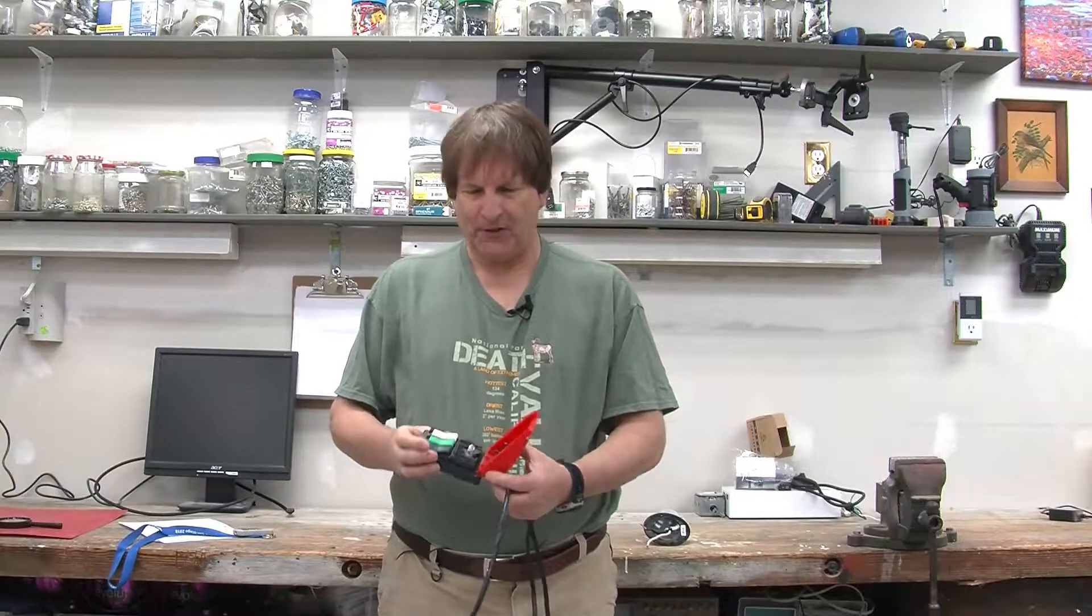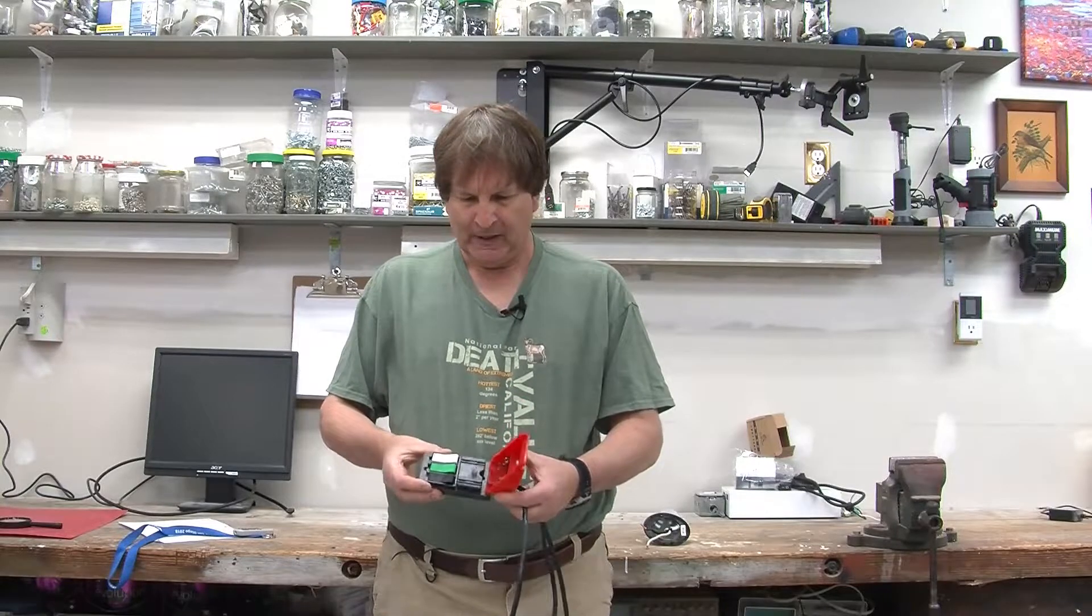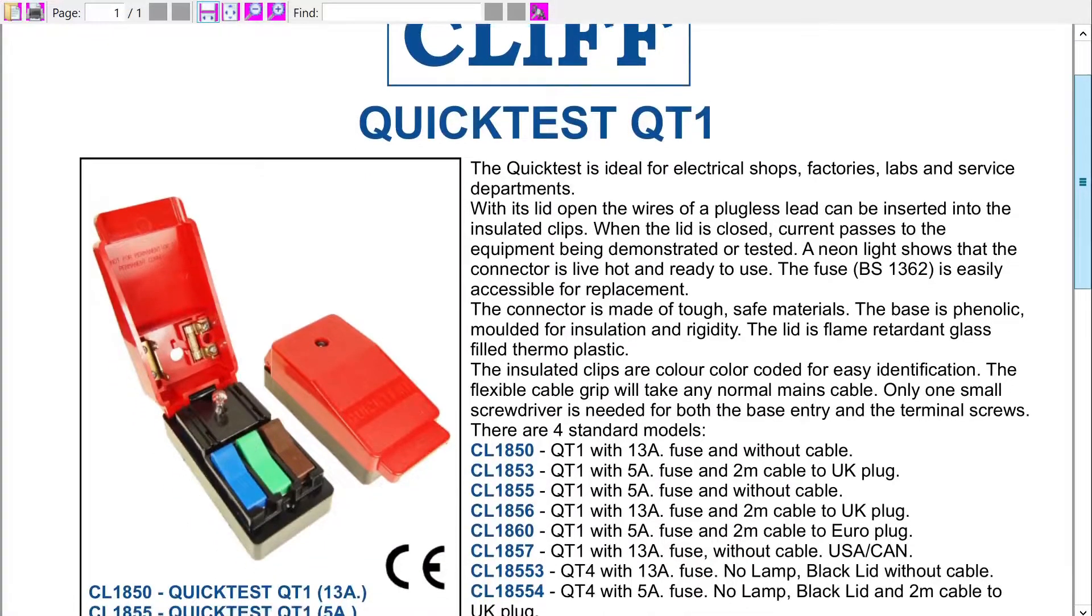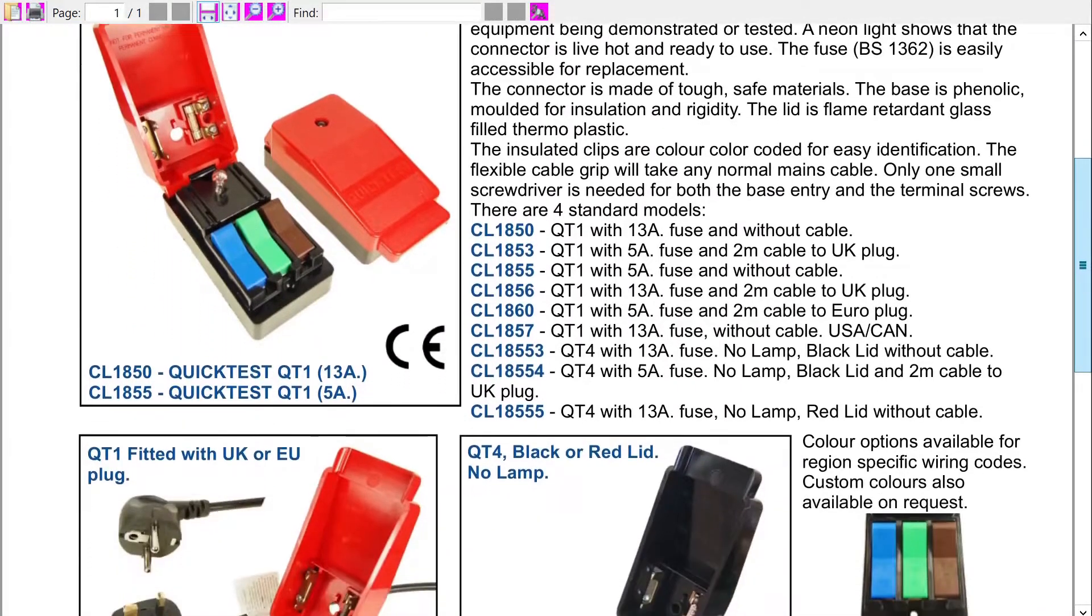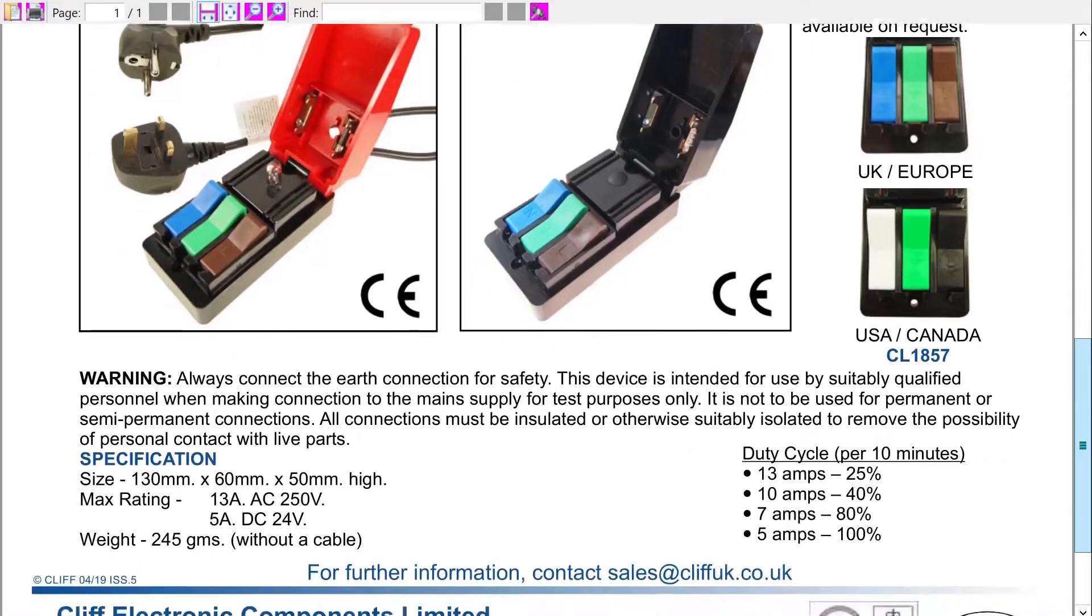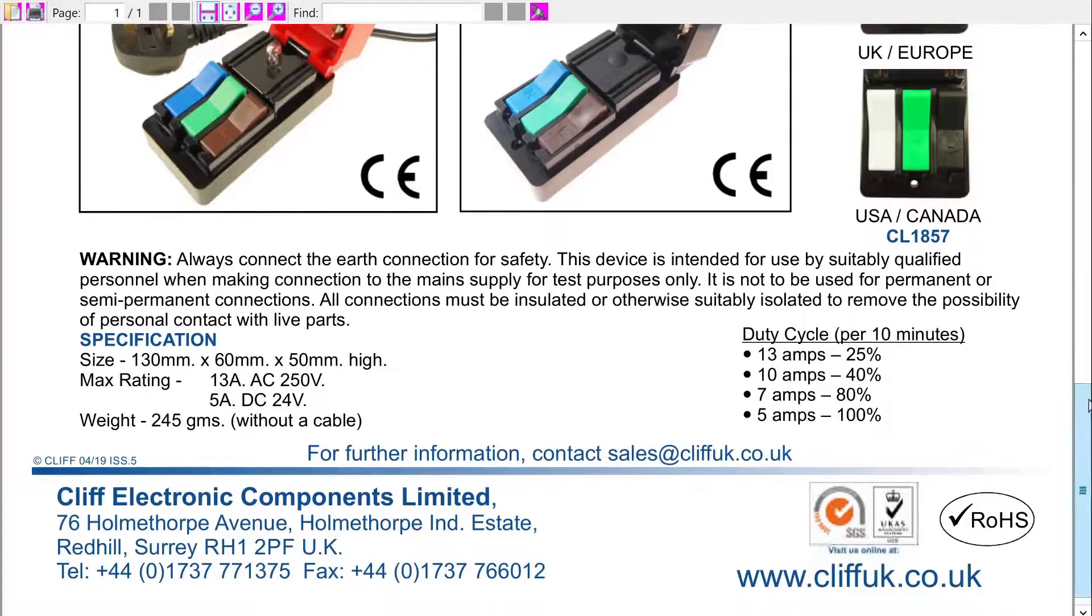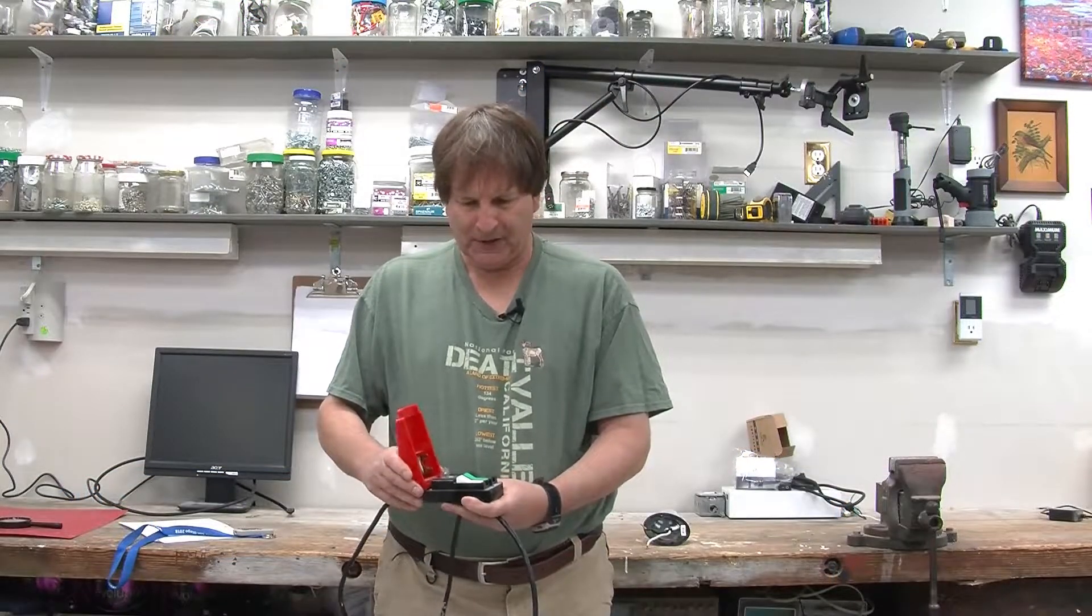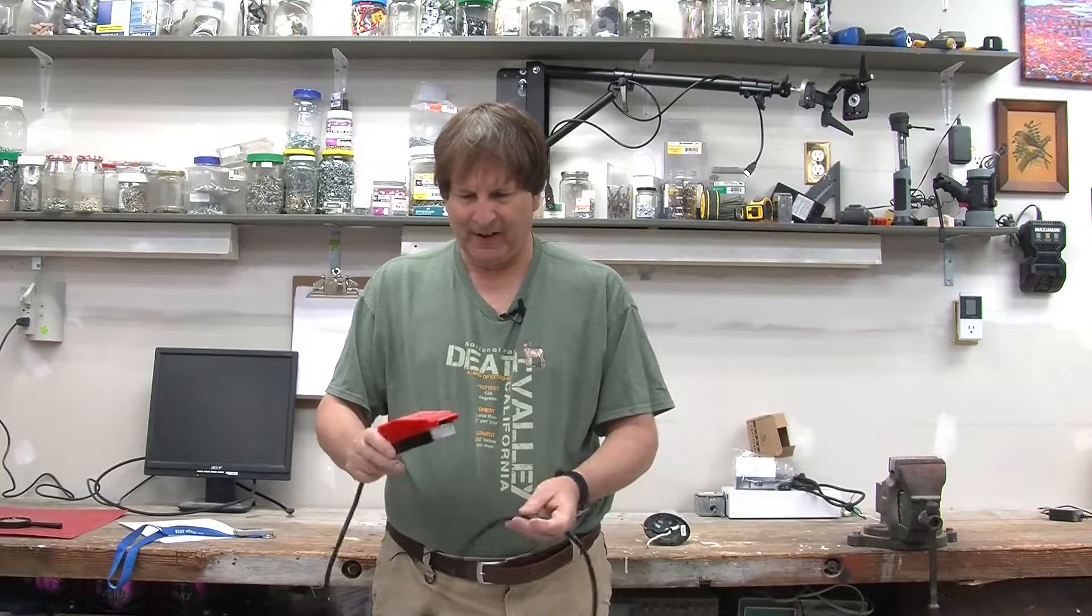It is the Quicktest QT1, and it's made by a British company called Cliff Electronics. And it serves a niche purpose, and the niche purpose is to be able to hook up electrical things that don't have a plug so you can test them easily and safely.